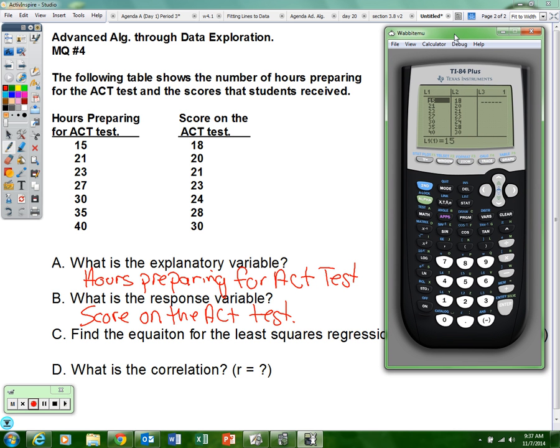Now you need to remember what buttons to push to get the least squares regression line. Hit your stat button again. Use your right arrow key to calculate and pick number four. Number four says linear regression. Now most of you will have an older calculator, so all you have to do is hit the enter button.